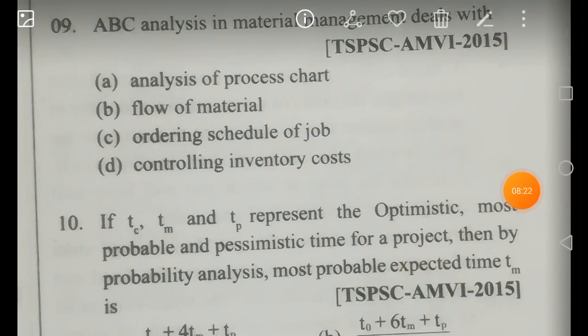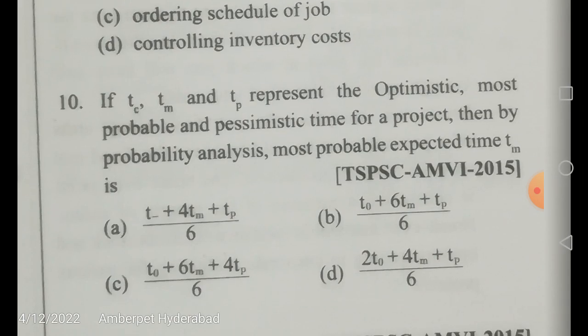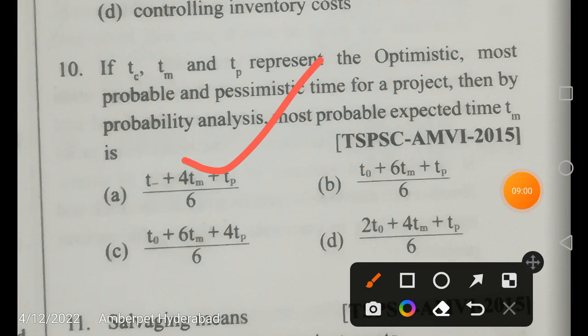In PERT, three time estimates are used: t_o (optimistic time), t_m (most probable time), and t_p (pessimistic time). The expected time is calculated as: t_e = (t_o + 4·t_m + t_p) / 6.